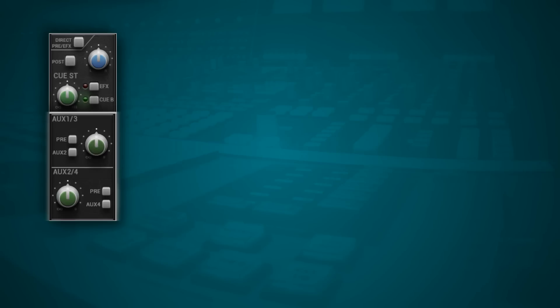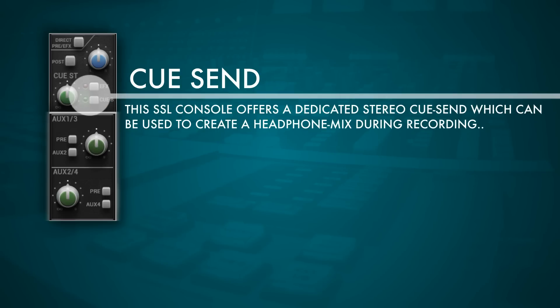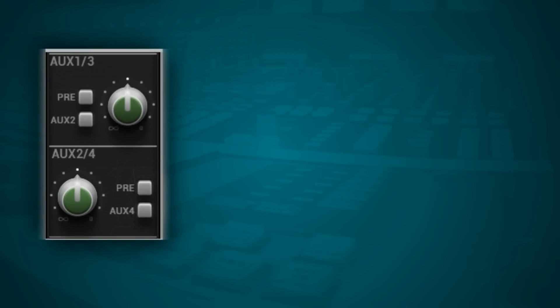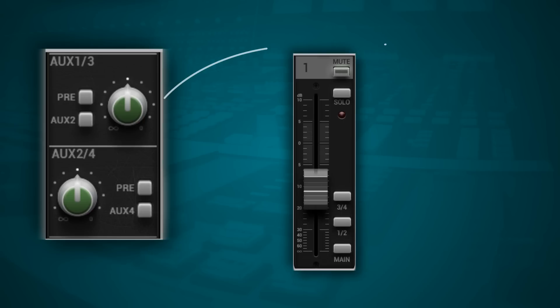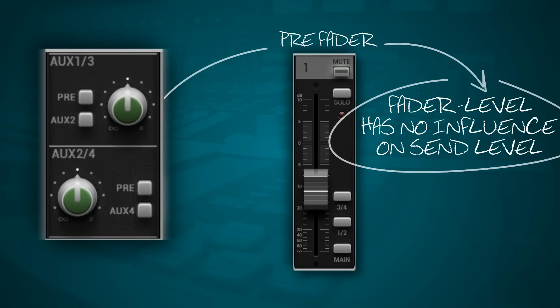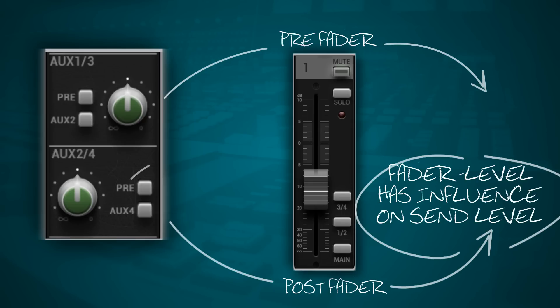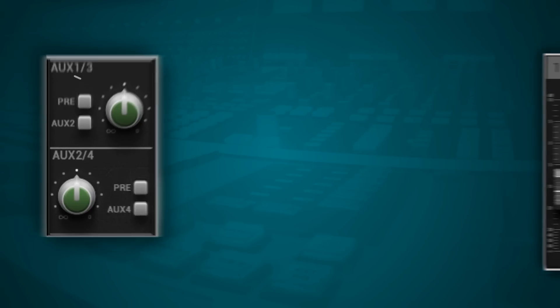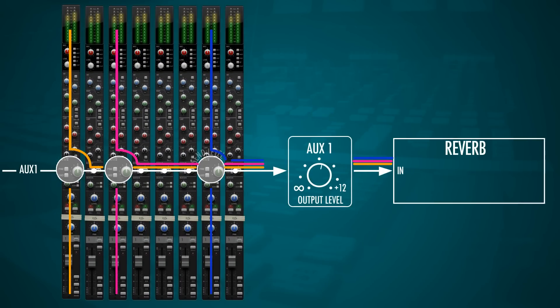Below the EQ and insert section we find the auxiliary section. On this particular model there's a separate cue send, which is a dedicated headphone mix. Normally this is referred to as an aux send. An auxiliary send can be either pre- or post-fader, indicated by a pre switch — if not pressed, it's post-fader. Auxiliary sends are used to send a portion of the signal to an effects processor, such as a reverb unit, so instead of using reverb as an insert, we use it as a send effect, allowing every channel to be sent to that reverb unit.